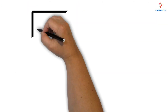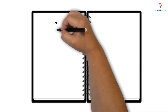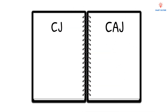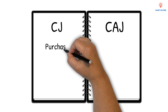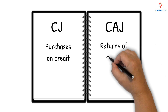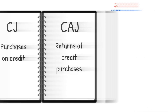To do this, we make use of the Creditor's Journal and the Creditor's Allowance Journal. We use the Creditor's Journal to record goods or services bought on credit. And we use the Creditor's Allowance Journal to record goods that are returned to suppliers.